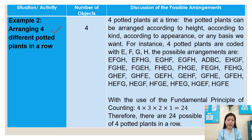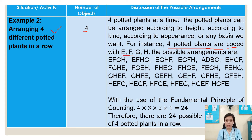Example number two: arranging four different potted plants in a row. The number of objects is four. The potted plants can be arranged according to height, kind, appearance, or any basis we want. For instance, the four potted plants are coded with E, F, G, H.